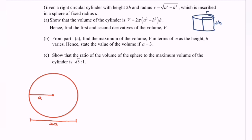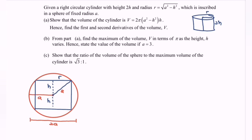Now I'm going to inscribe the right circular cylinder in 2D form into the circle. The right circular cylinder looks like a rectangle in 2D form. Here we have h and another h. Based on the diagram, this will be the radius r and this will be a, the radius for the sphere.